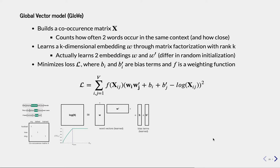Now we arrive at GloVe, or the Global Vector model, which is probably one of the most commonly used word embedding approaches. Unlike Word2Vec and FastText, GloVe doesn't just look at the local context of a word, but builds a matrix that encapsulates how all words co-occurred together across all text.